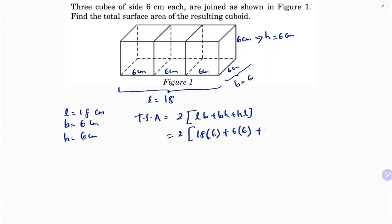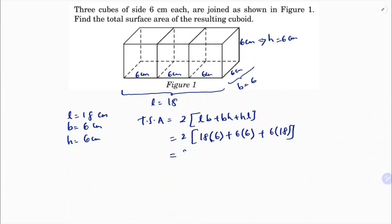6 into 6 plus 6 into 18). Two into (18 times 6 plus 6 times 6 plus 6 times 18). So 18 times 6 is 108, 6 into 6 is